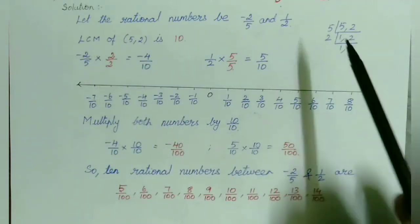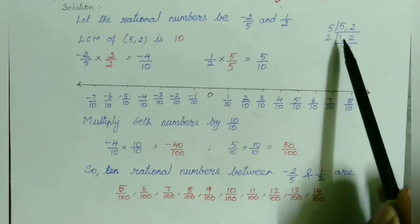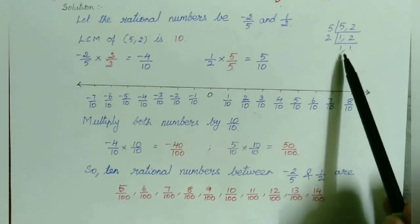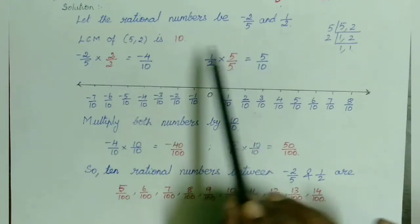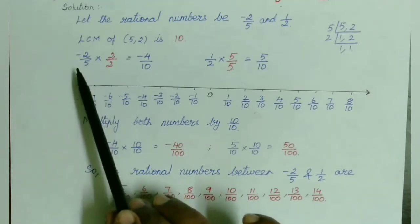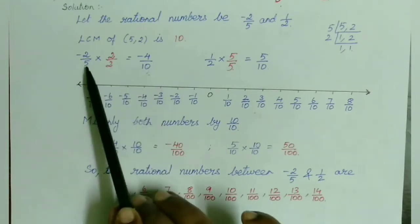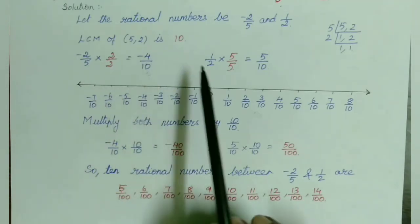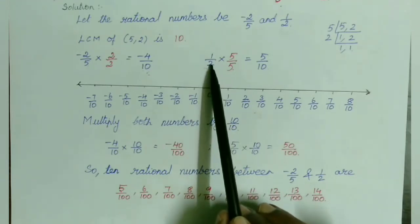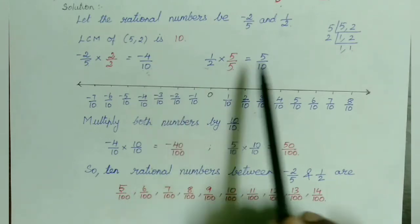LCM of 5 and 2 is 10. Write the numbers inside an L-bracket: 5, 2. 5 ones are 5; 2 will be as it is. 2 ones are 2; 1 will be as it is. So LCM of 5 and 2 is 10. Now for the first rational number, minus 2/5: to convert the denominator to 10, multiply by 2 — so minus 2 times 2 equals minus 4, giving minus 4/10. Similarly, for 1/2: multiply by 5 — so 1 times 5 equals 5, giving 5/10. My new numbers are minus 4/10 and 5/10, now with the same denominator.